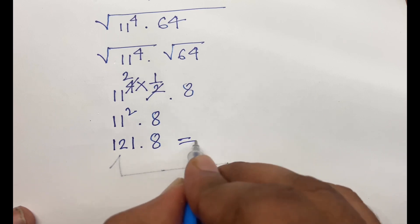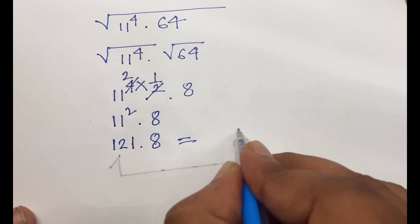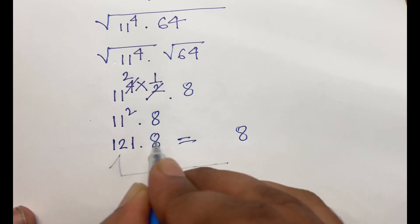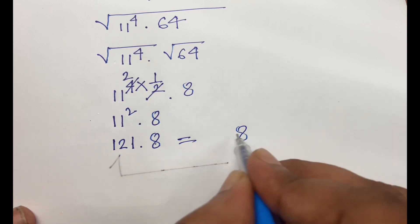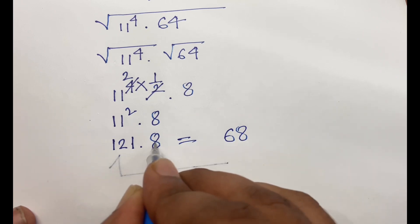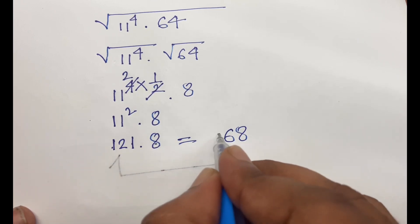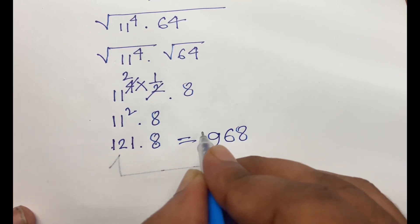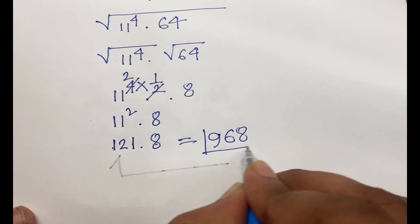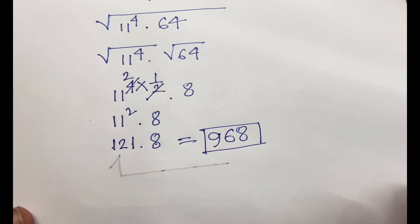Calculating 121 times 8: 8 times 1 is 8, 8 times 2 is 16, and 8 times 1 and 1 gives 9. So 121 times 8 equals 968. This is our final answer.